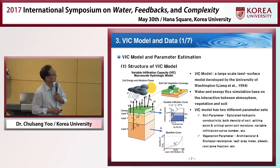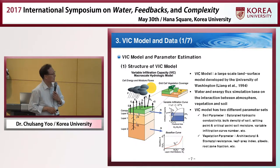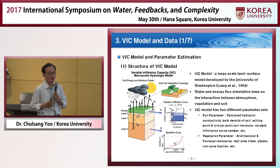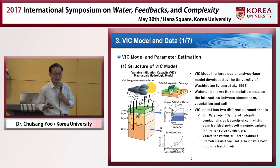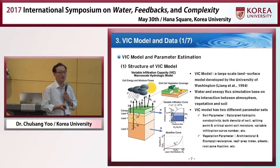This slide summarizes what the VIC model is. It is a large-scale land surface model developed by the University of Washington. It considers water balance and energy balance, and some kind of interaction between the soil, vegetation, and atmosphere. The VIC model has two different parameter sets — one related to soil, another to vegetation. With information about the soil and vegetation cover, we can automatically decide the parameters without any trial-and-error or optimization techniques. VIC stands for Variable Infiltration Capacity — a technique to improve the quality of runoff simulation.